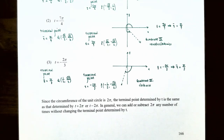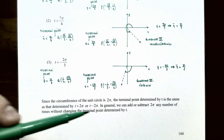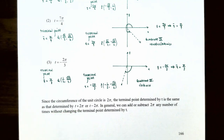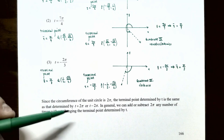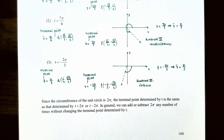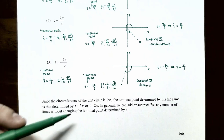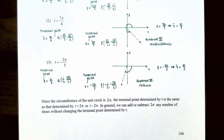Since the circumference is 2π, the terminal point for t is the same as for t + 2π or t − 2π. You can add or subtract 2π any number of times without changing the terminal point.